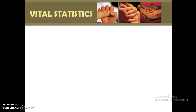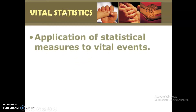For health indicators to be more specific in terms of numbers, we introduce what we call vital statistics. Vital statistics is basically the application of statistical measures to vital events. Vital events — examples are deaths, births, marriages, migration, or anything that could affect the population.